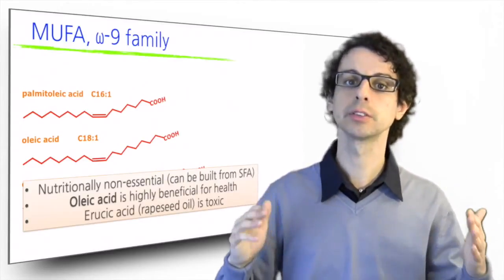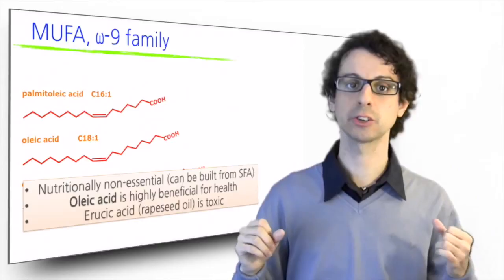But don't think that all monounsaturated fats are equally as good. For example, erucic acid C22 is toxic for us. It was once abundant in rapeseed oil, which is why it couldn't be marketed for human consumption for a long time. But today we have developed a genetically modified version of rapeseed that builds oleic instead of erucic. We call it canola oil, and it is now okay for human consumption.